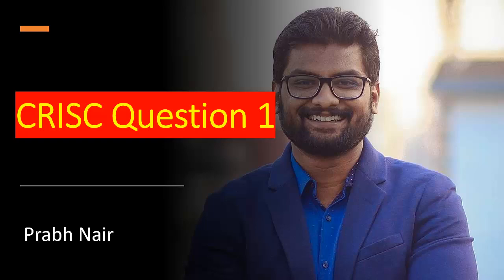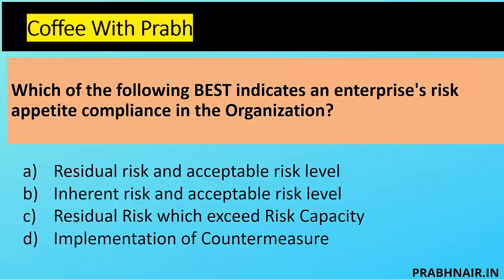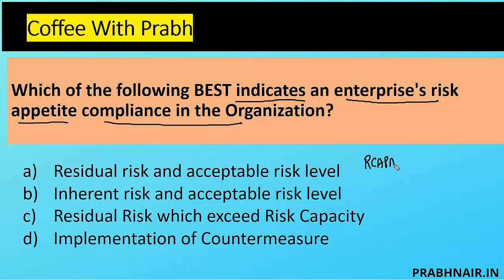The first question is: which of the following best indicates enterprise risk appetite compliance in an organization? Before discussing this question in detail, let me first explain some parameters: we have risk capacity, risk appetite, and risk tolerance.